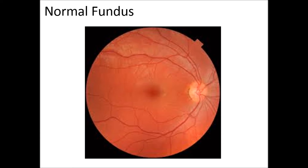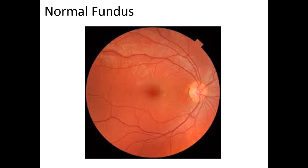The normal fundus: The optic disc is pink and has well-defined margins. The central cup is 0.3 times the size of the disc. The vessels arise from the disc and divide into four main branches — supratemporal, supranasal, infratemporal and infranasal. The diameter of the artery to the vein is 2:3. Light is reflected from the surface of the arteries. Light reflecting from the fovea is known as the foveal reflex and is seen when the macula is viewed.